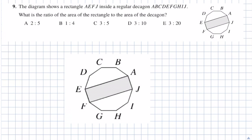Question 9. The diagram shows a rectangle AEFJ inside a regular decagon ABCDEFGHIJ. What is the ratio of the area of the rectangle to the area of the decagon? Answers: A is 2 to 5; B is 1 to 4; C is 3 to 5; D is 3 to 10; and E is 3 to 20.